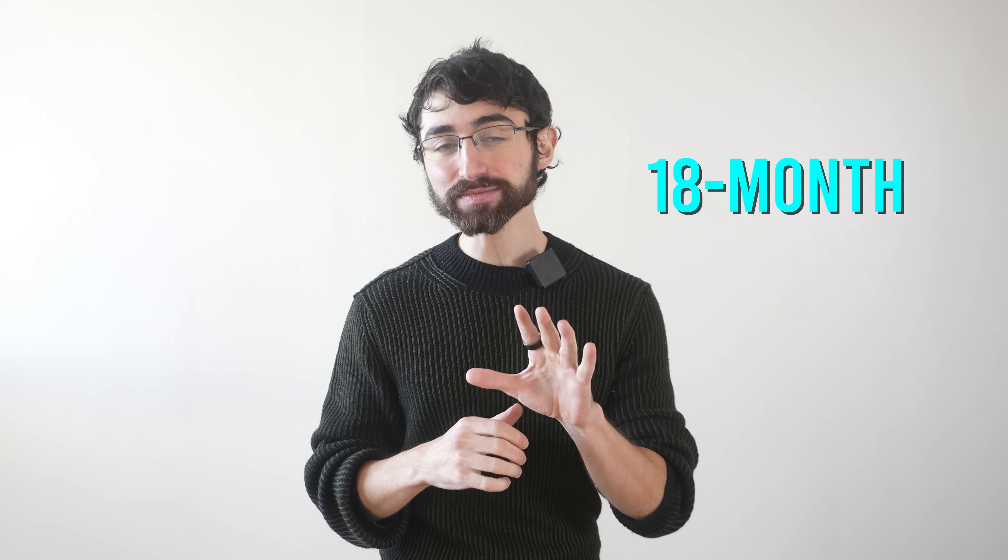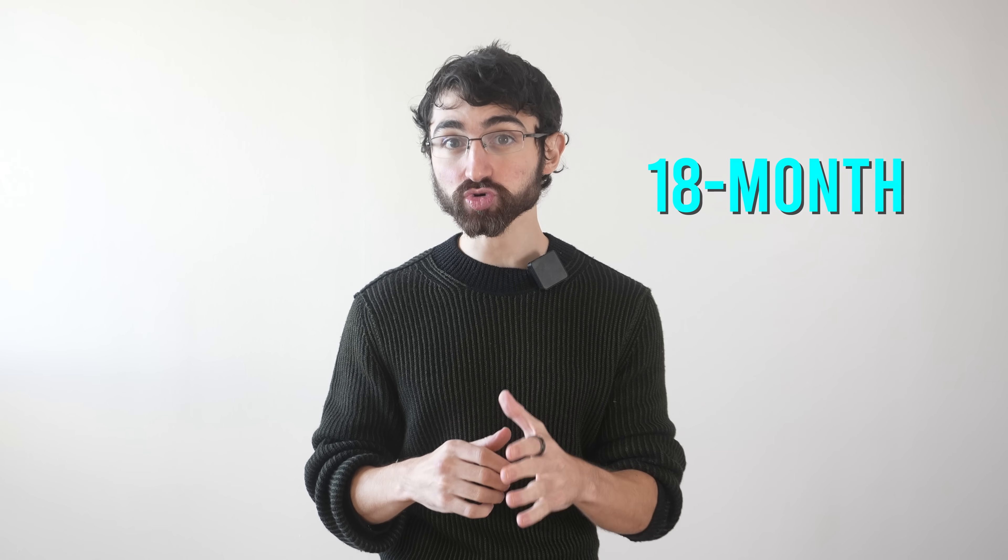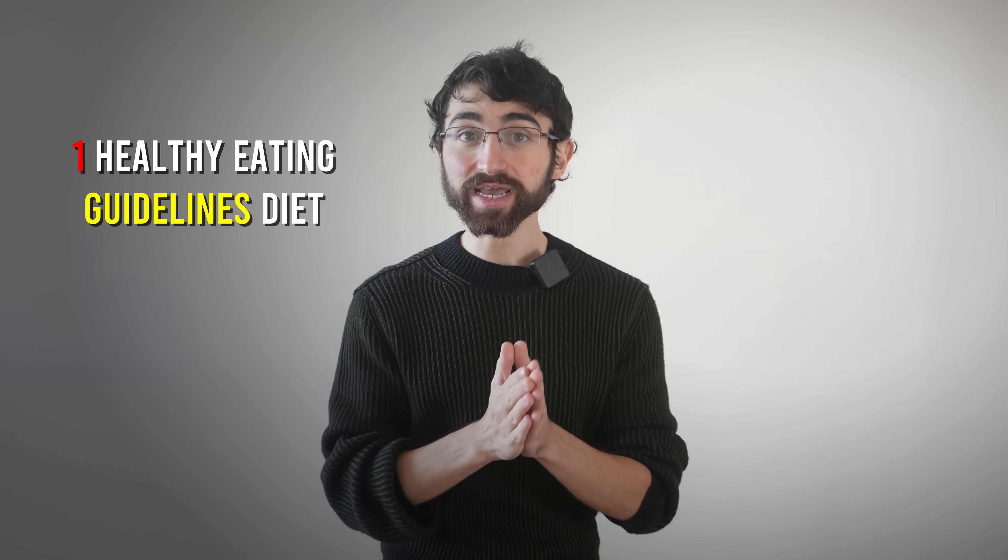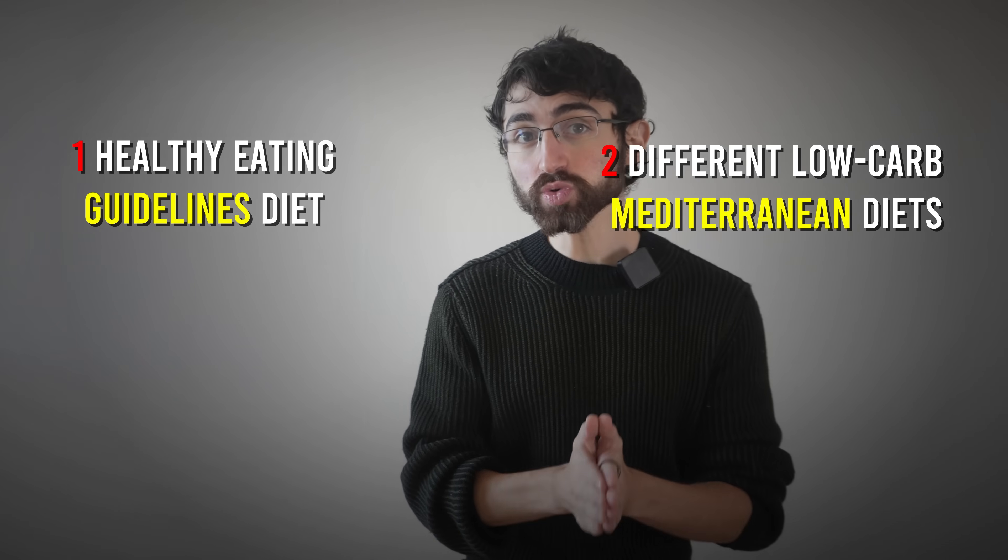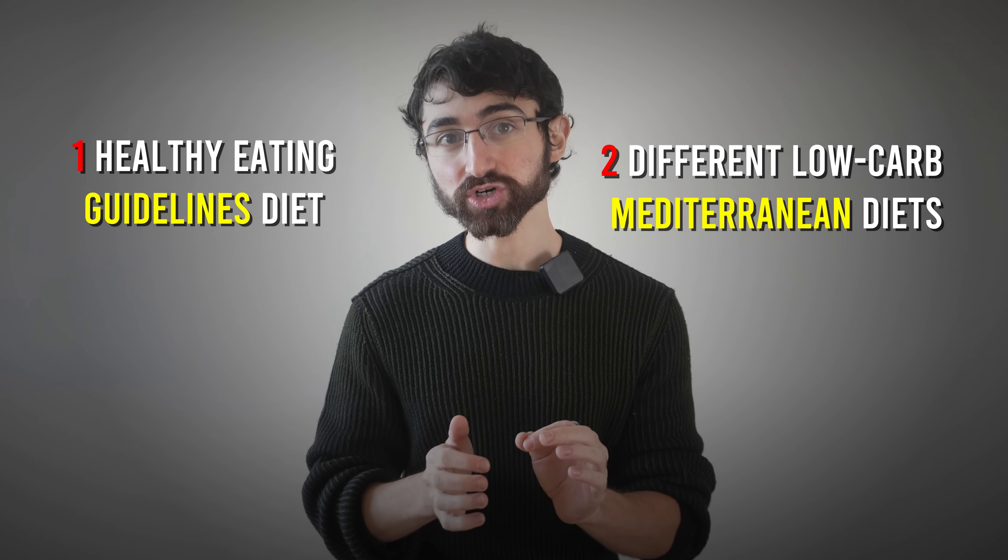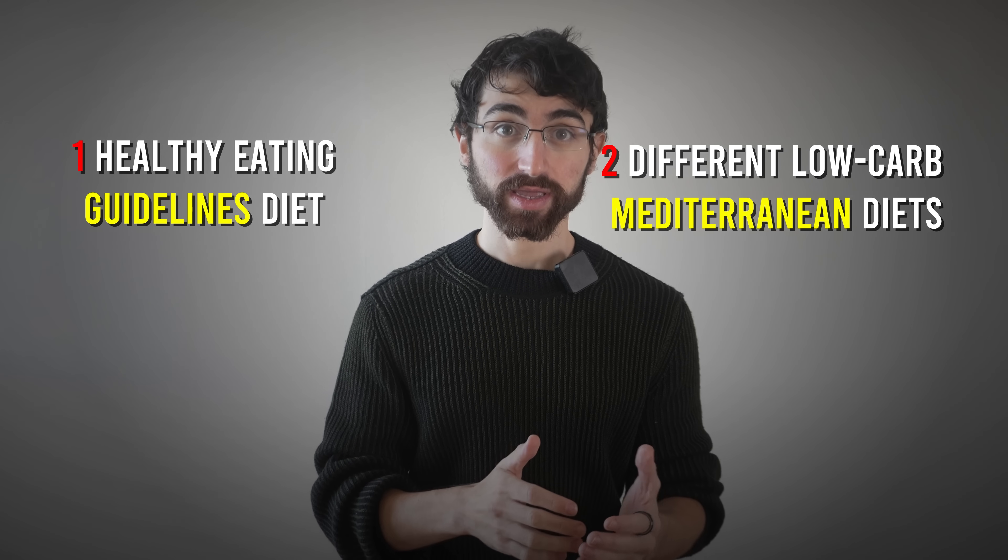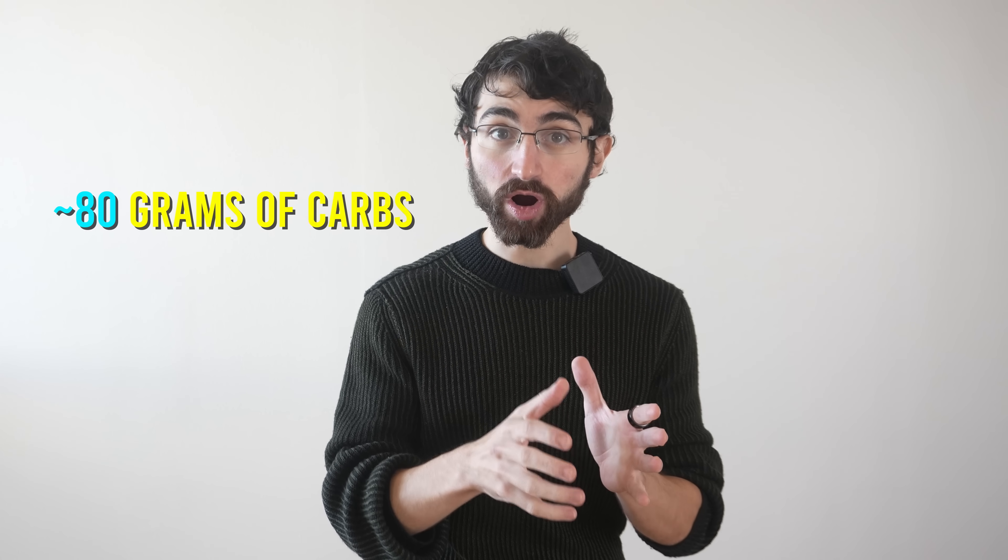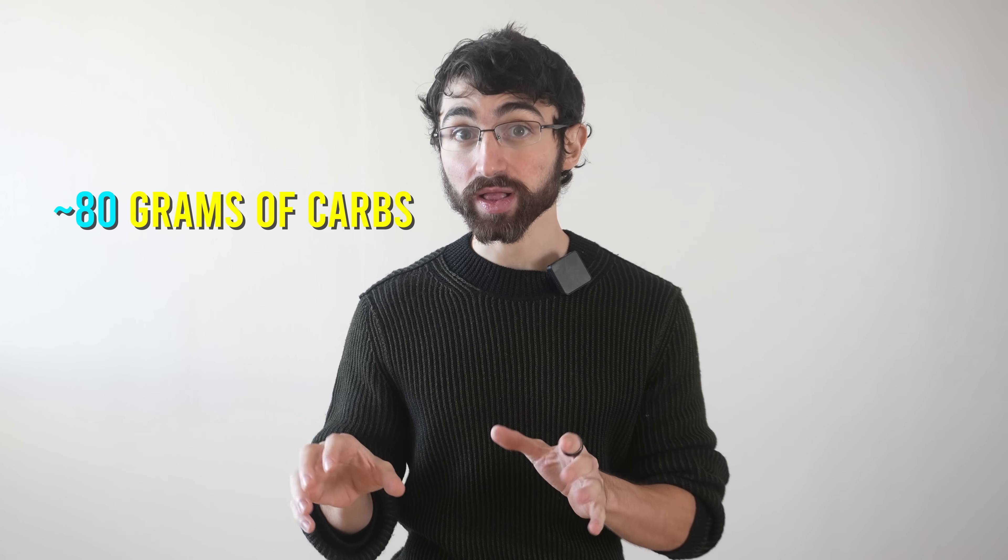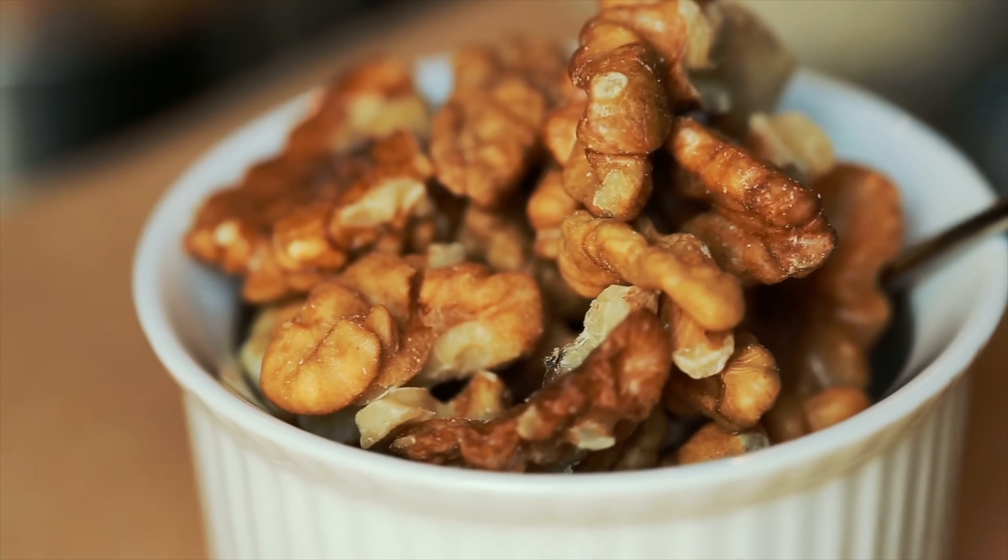This was an 18-month-long randomized controlled trial in people with obesity that compared three different diets: one healthy eating guidelines diet and two different low-carbohydrate Mediterranean diets. Both low-carbohydrate Mediterranean diets included about 80 grams of carbs for the majority of the trial and were designed to also be isocaloric.